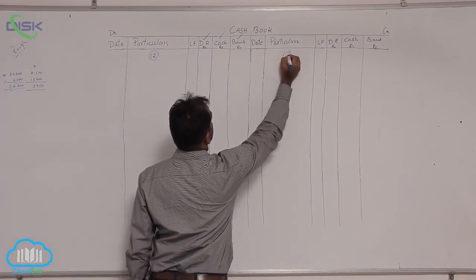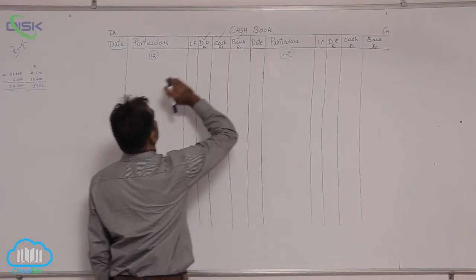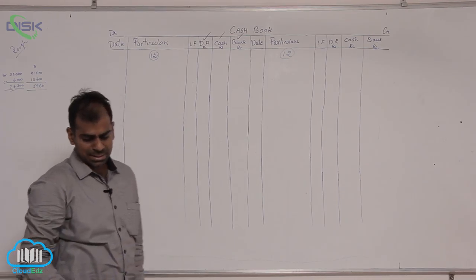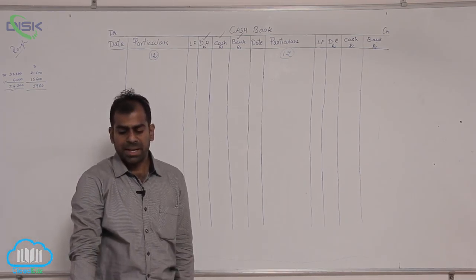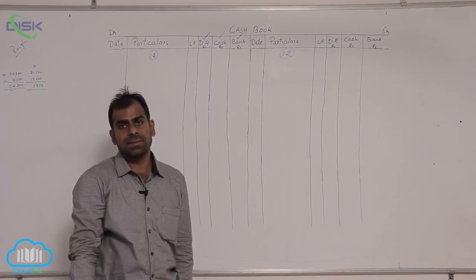Some important transactions. In problem number 12, transaction on 4th October, paid to Kaushik, discount received.